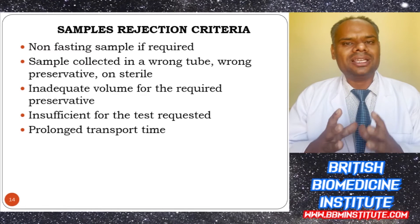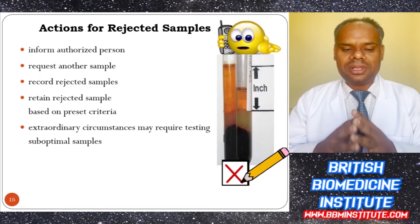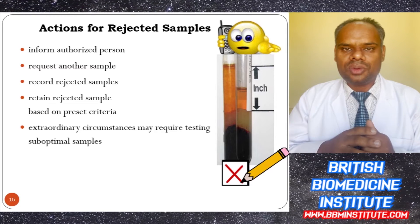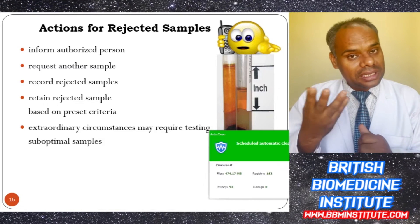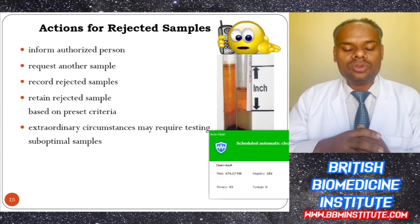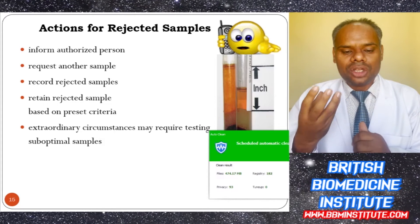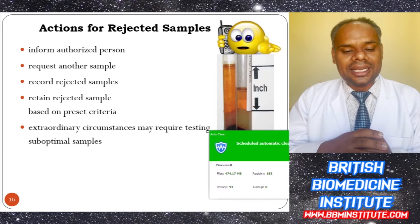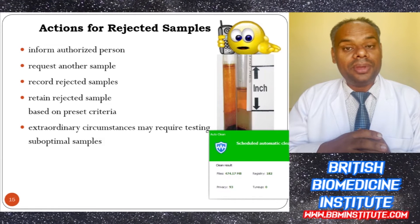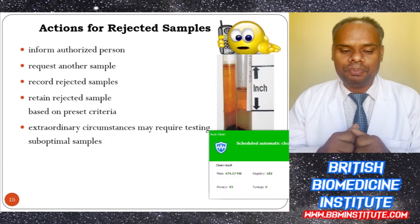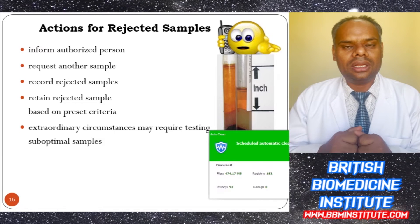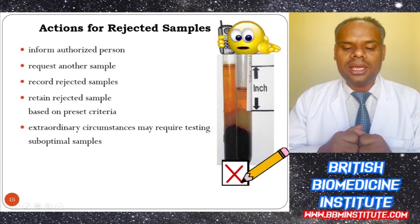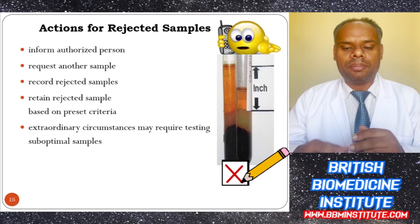Actions against rejected samples include: informing the authorized person, requesting another sample, recording rejected samples, retaining the rejected sample based on present criteria, and under extraordinary circumstances, requesting a suboptimal sample.